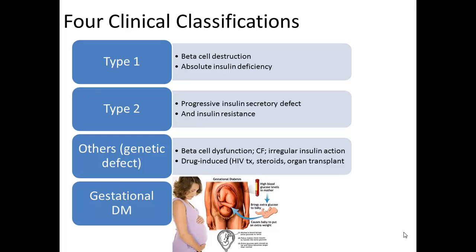As a review, the classification of diabetes includes four clinical scenarios. In type one we have total beta cell destruction, which usually leads to absolute insulin deficiency. Type two diabetes results from a progressive insulin secretory defect on the background of insulin resistance, and it can progress until basal insulin therapy is needed.